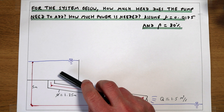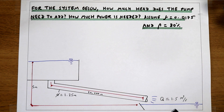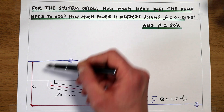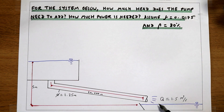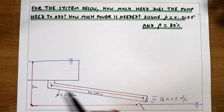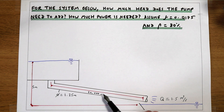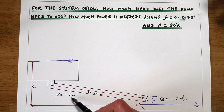In this example we've got a reservoir that's full of water and we need to move water from that reservoir to a second reservoir. The second reservoir's water surface is five metres below the water surface of the first reservoir, and we need water to be delivered at a flow rate of 1.5 metres cubed per second. The pipe between the two reservoirs is 20,000 metres long, and the diameter of the pipe is 1.25 metres.